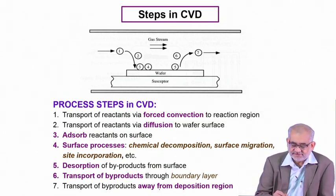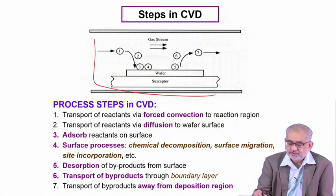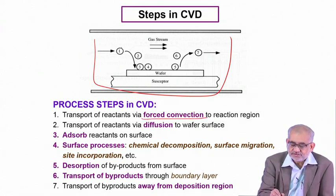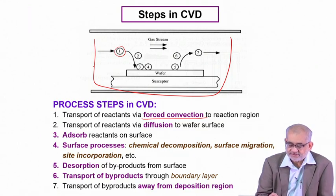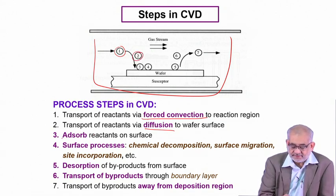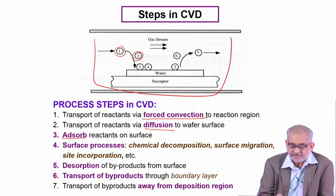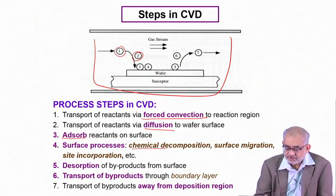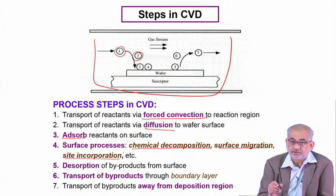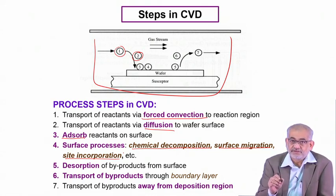The process follows certain steps. Initially you have to feed in the precursor gases through forced convection — this is how the precursor gases come to the reaction chamber. Then they undergo a certain amount of diffusion onto the wafer or substrate surface, and then they get adsorbed. This is where the reaction takes place and the desired species get adsorbed onto the surface. Then the surface processes begin, which involve decomposition, surface migration, and site incorporation.